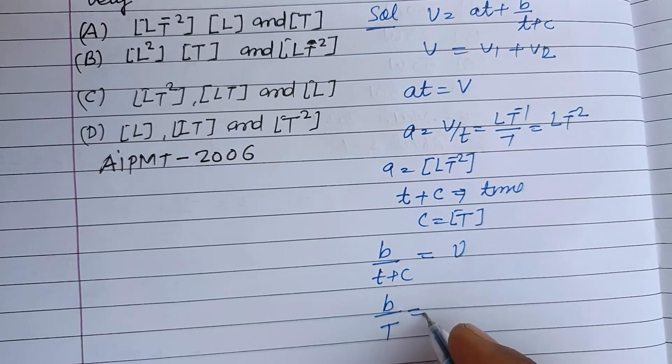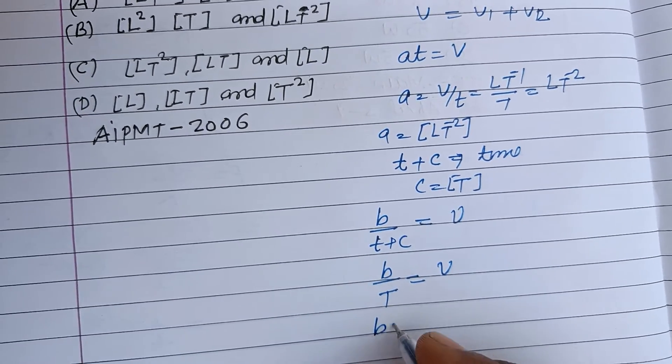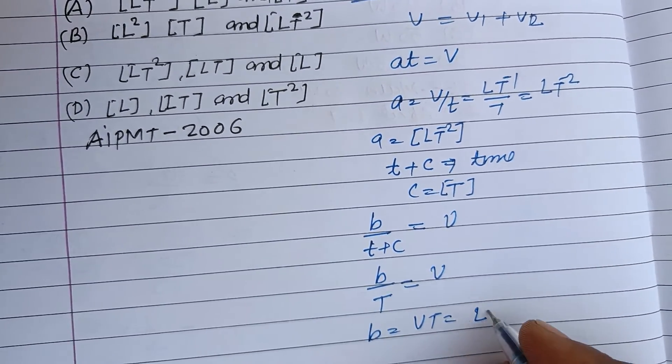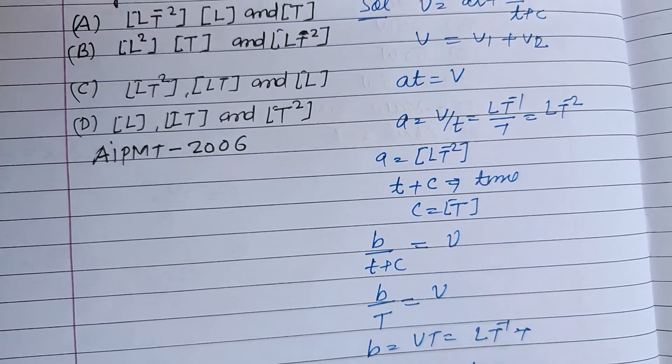Therefore b = v × T. This is L T^-1 × T, so this is L. Therefore dimension of b is L.